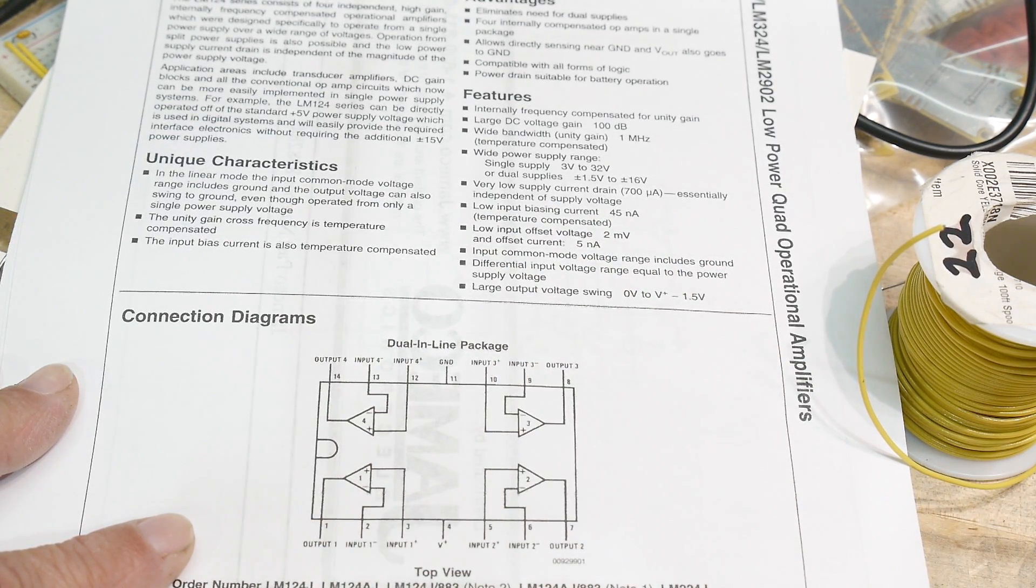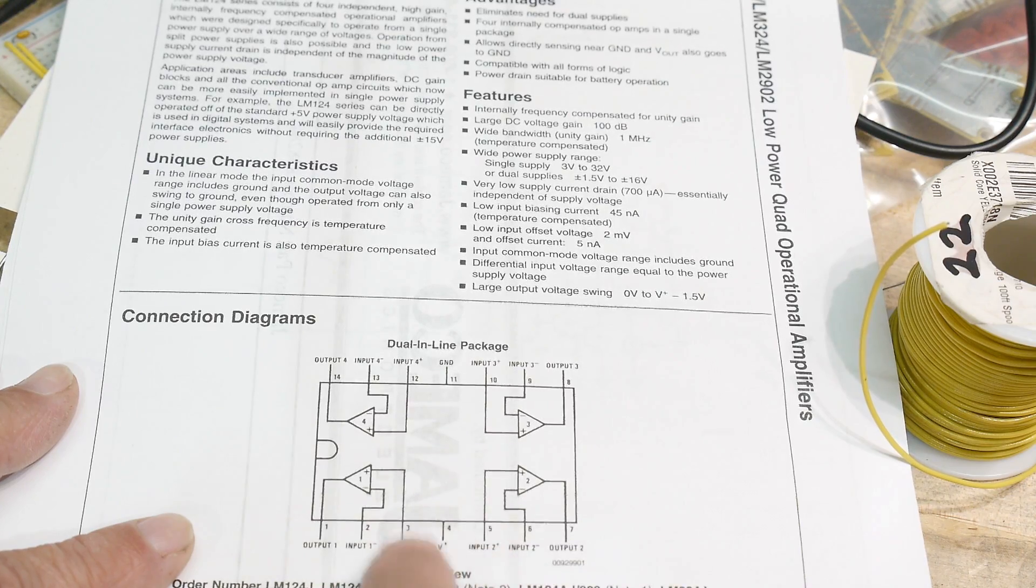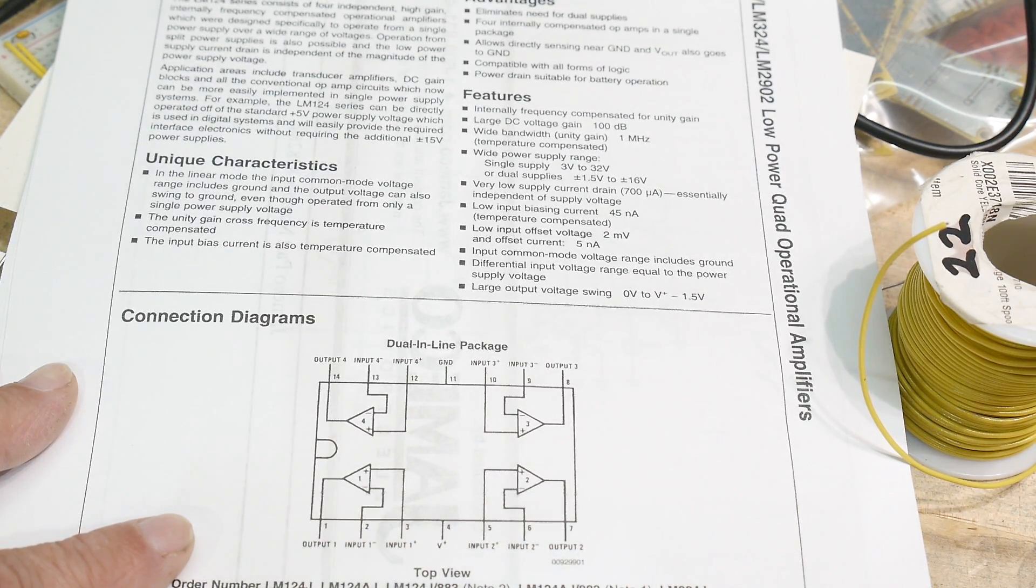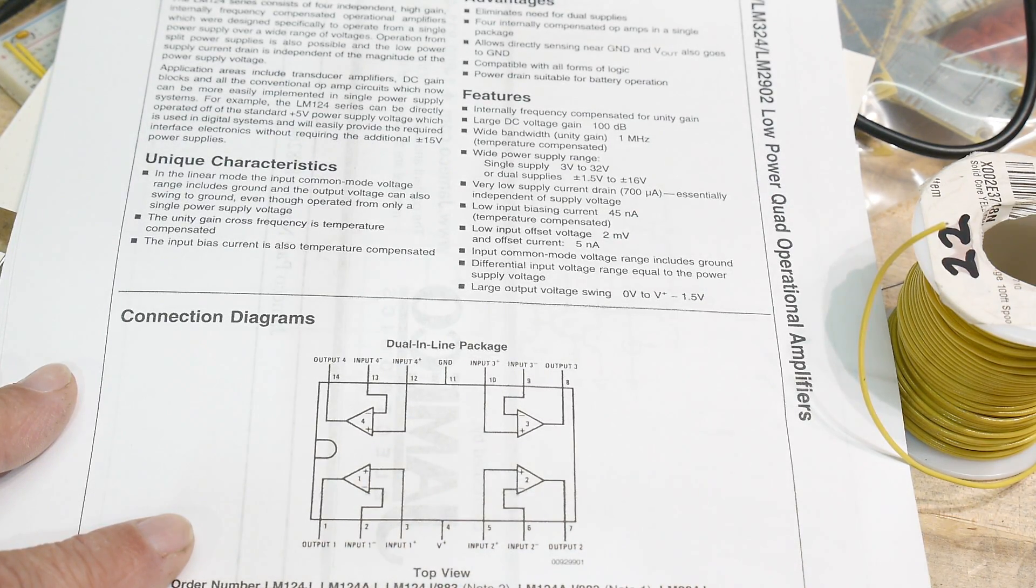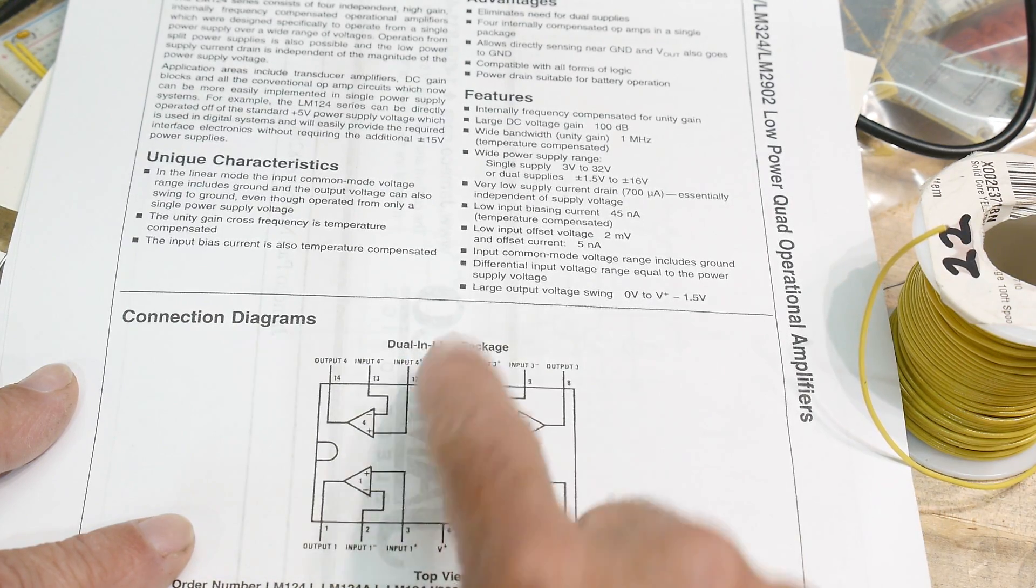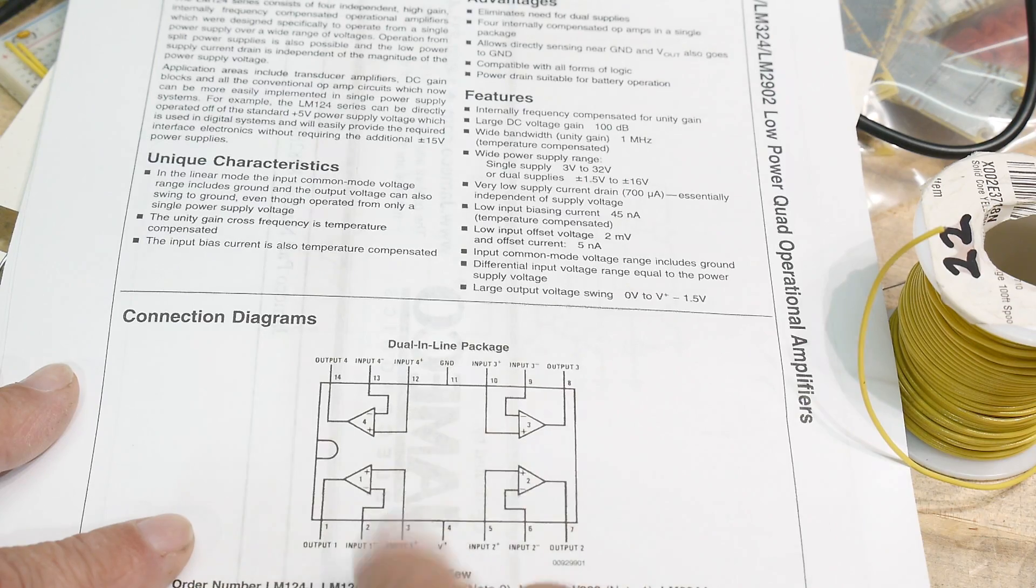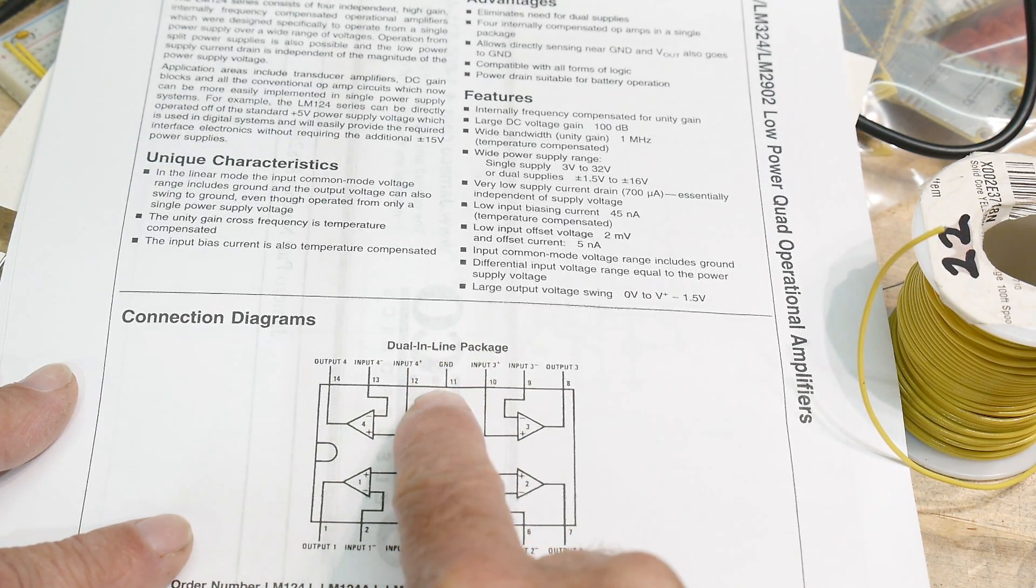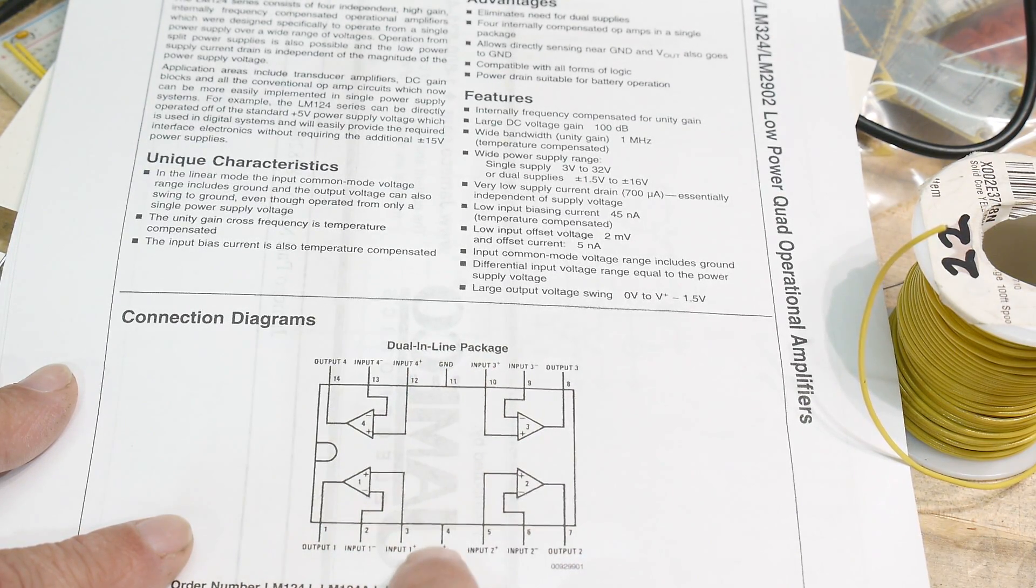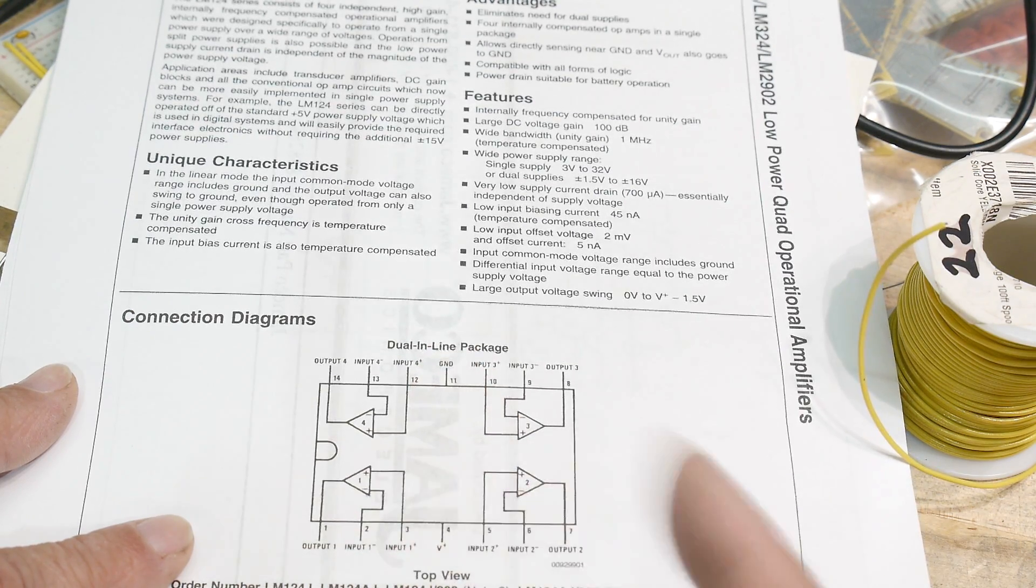The plus inputs are near the center and the power is a bit odd. You would have thought the negative would have been on this side and the positive on this side, but they did it the other way around. Ground is over here on pin 11 and the plus V is over on pin 4.